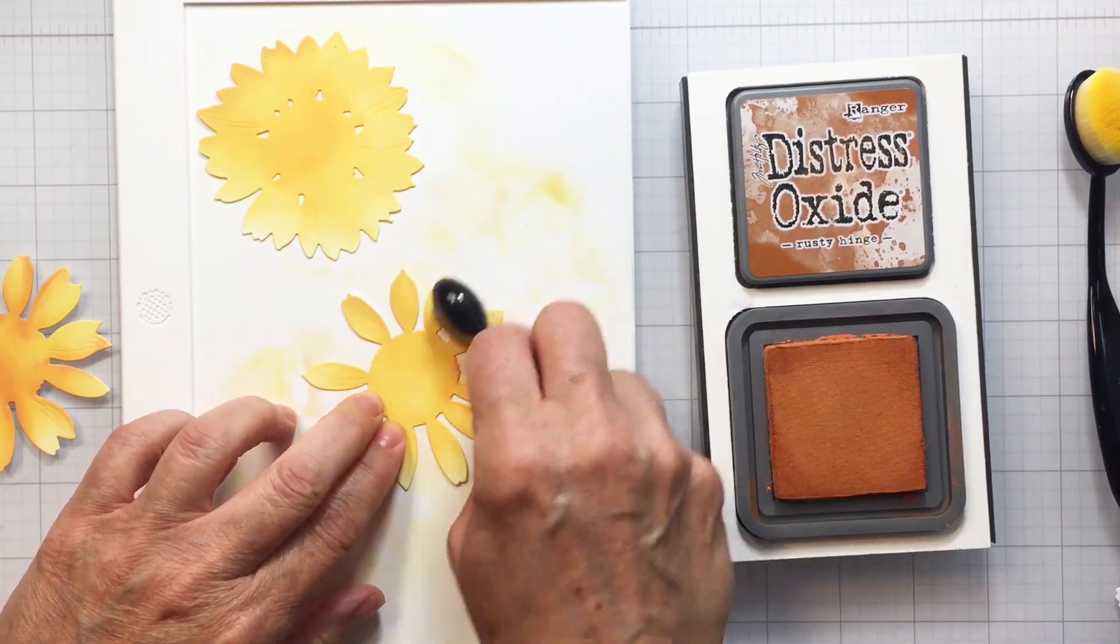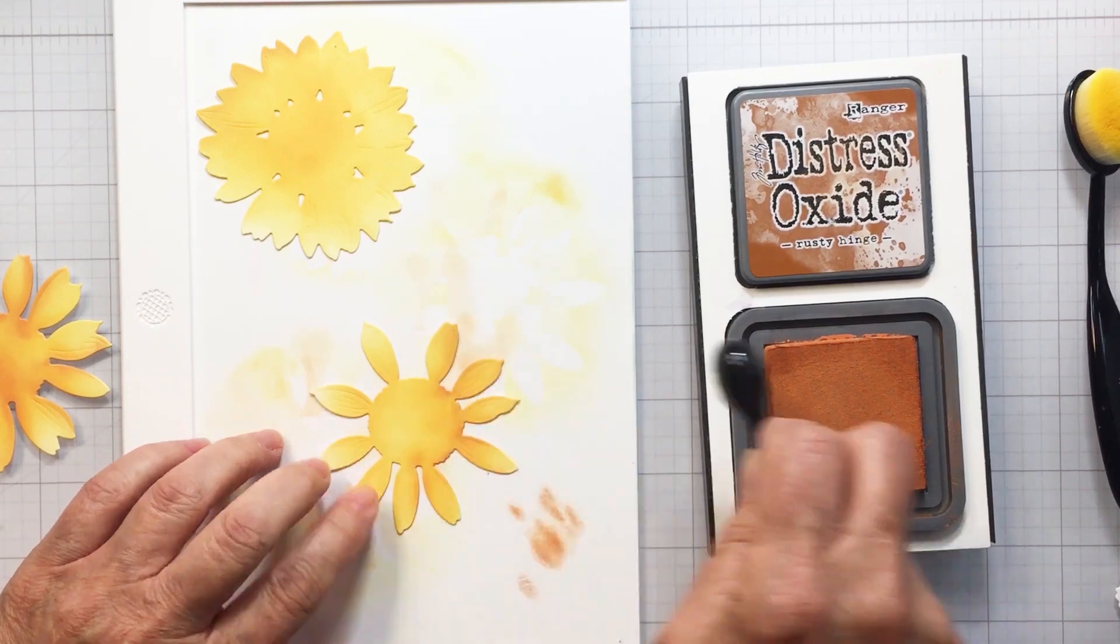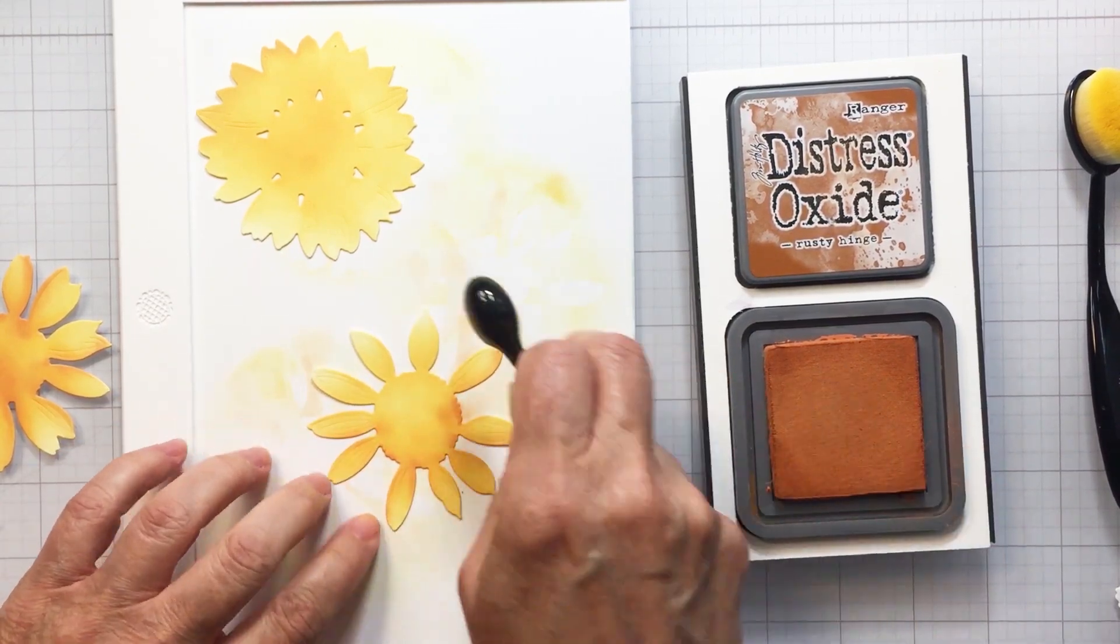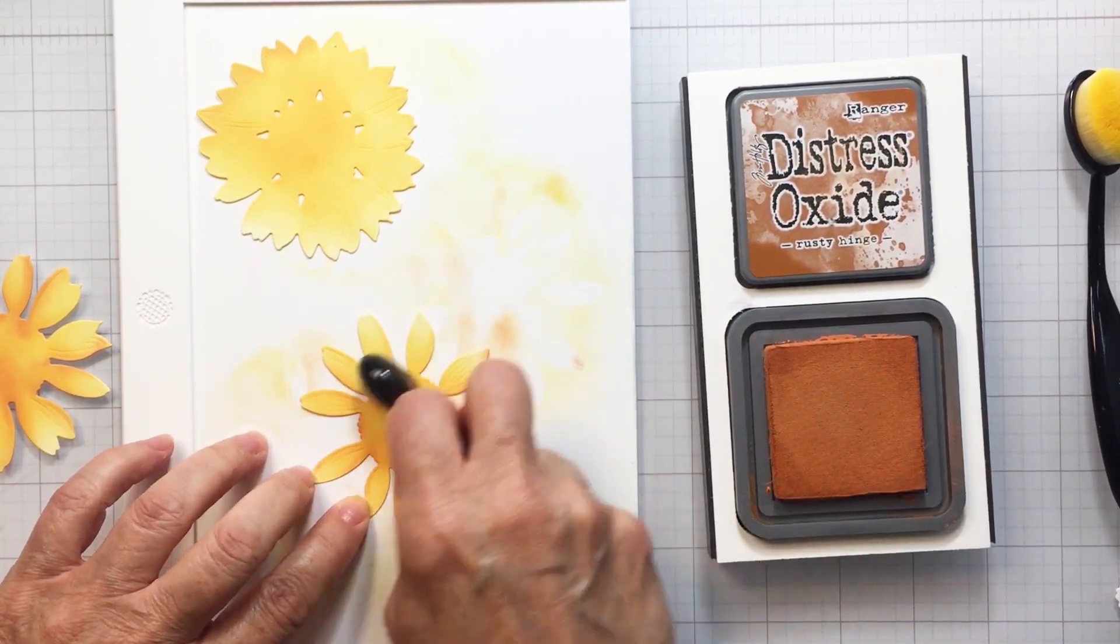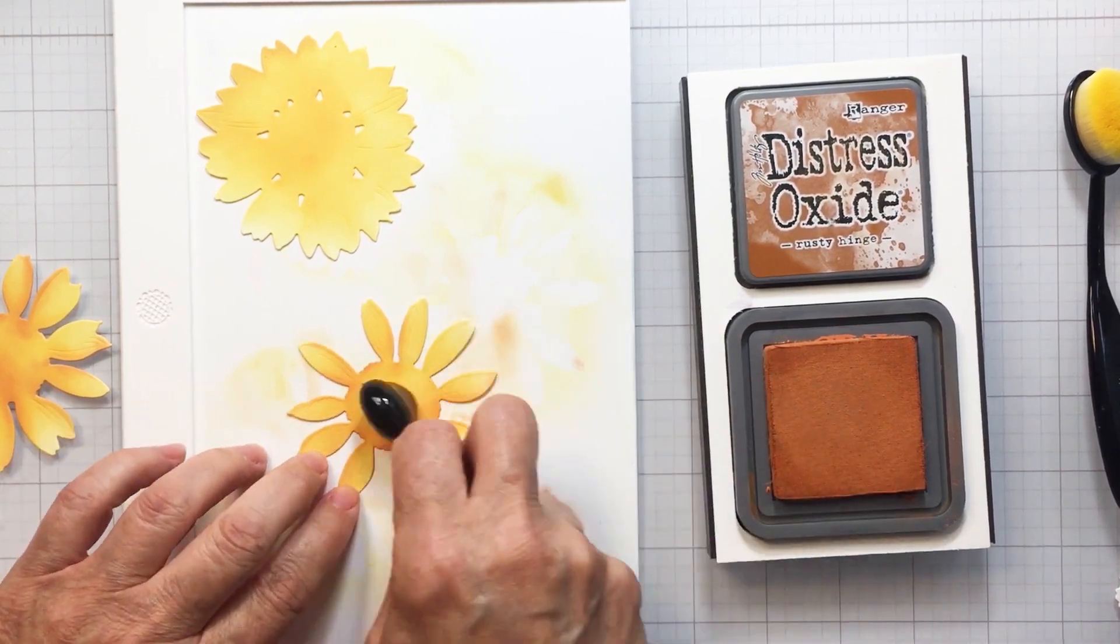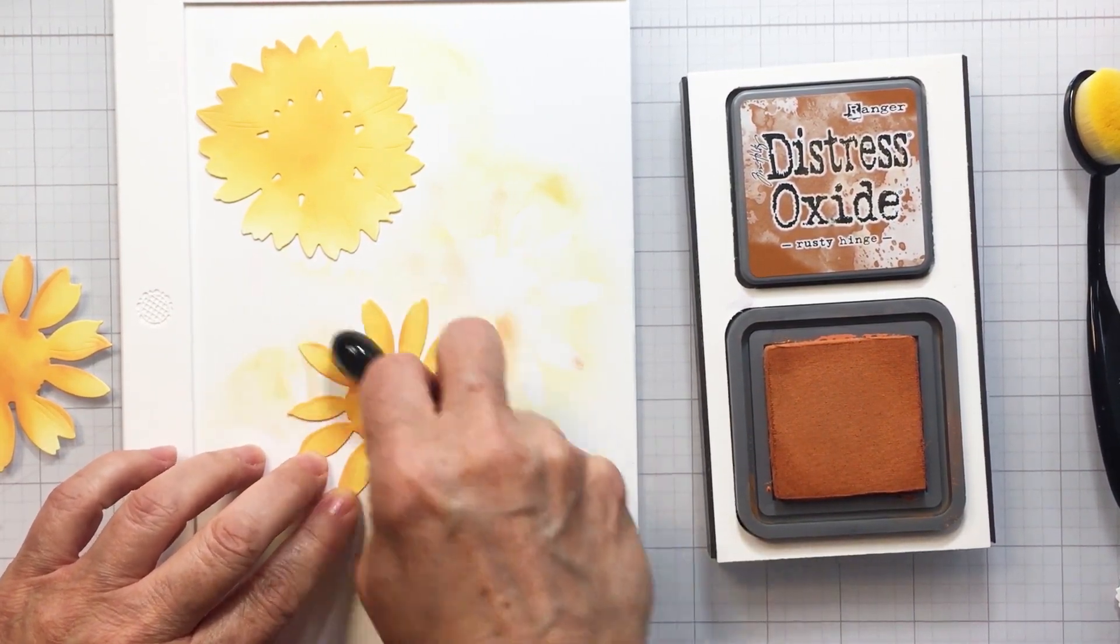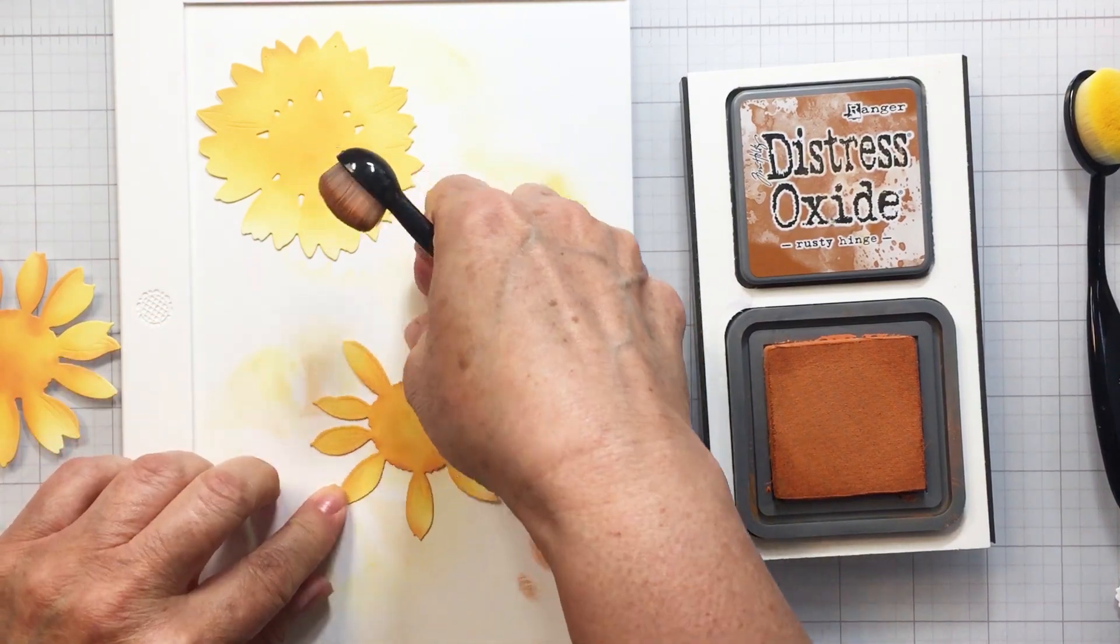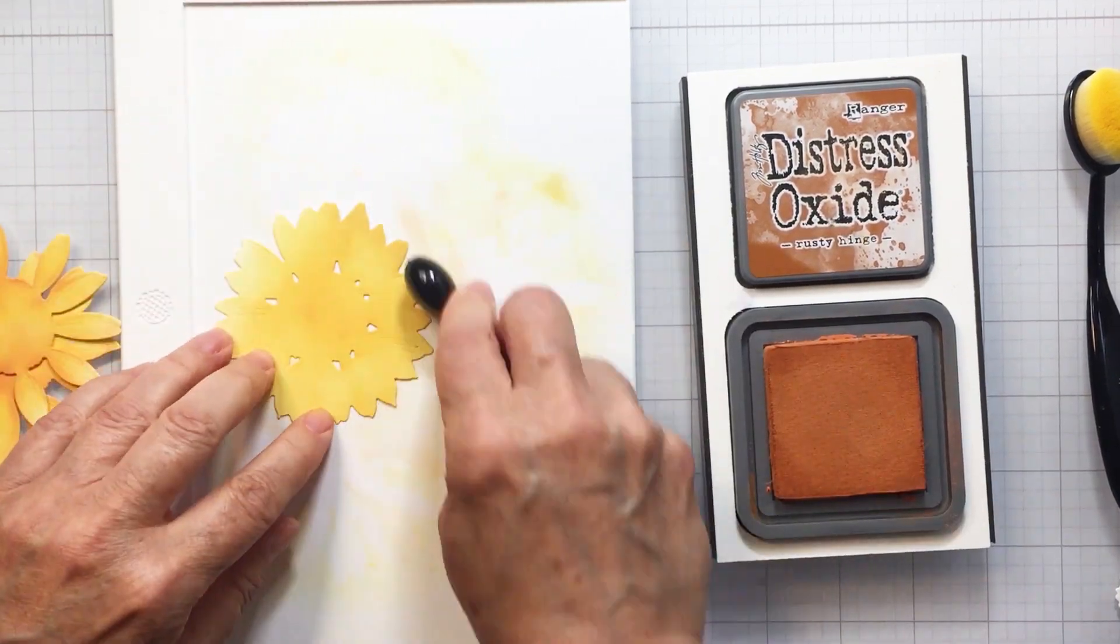I love working on this for stenciling, ink blending, all of those kinds of techniques where you want your paper to just sit still while you do that blending. This mat cleans up so nicely just with a little bit of water and a towel, and I do really love working on these waffle flower mats so much.